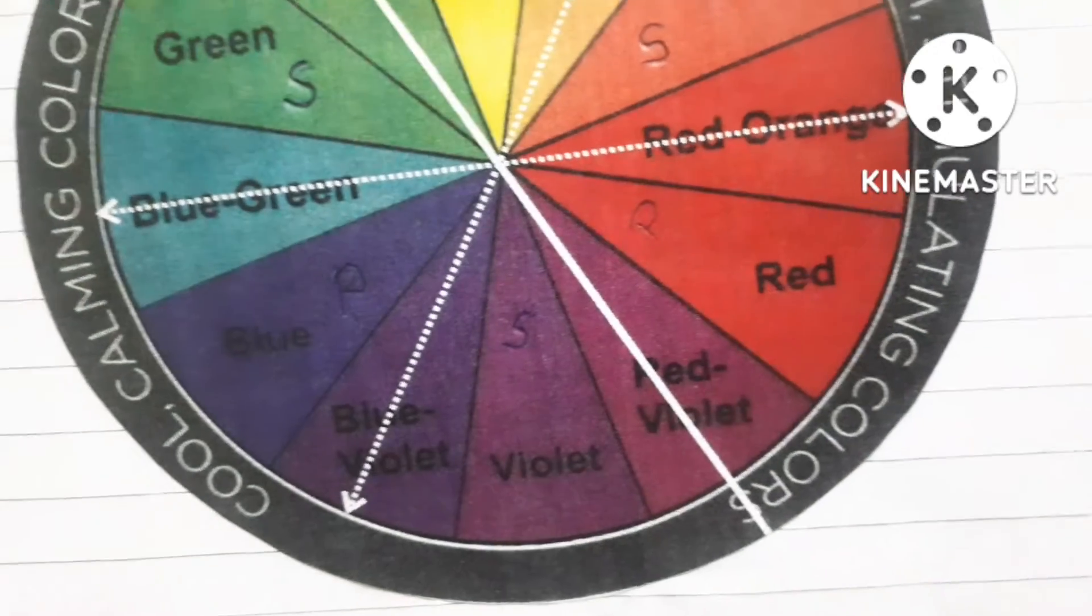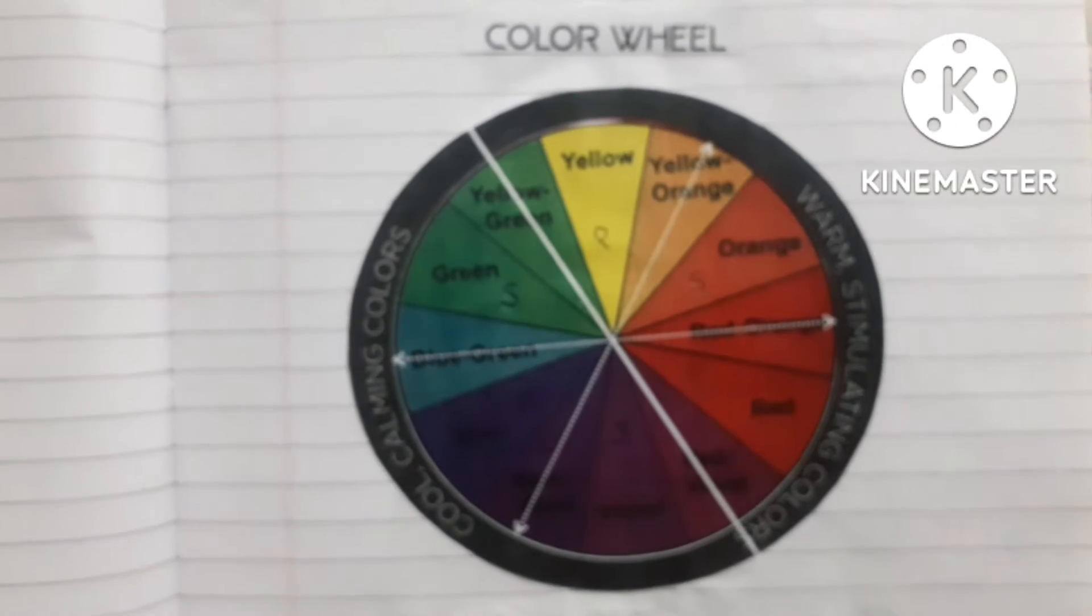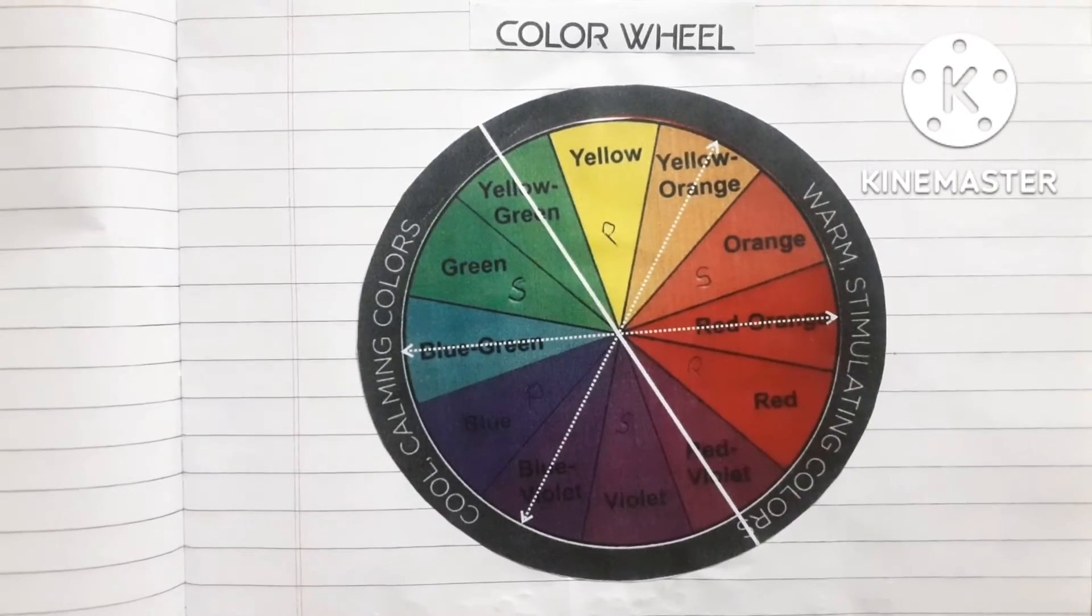The in-between colors is called tertiary colors. For example, we take yellow and orange, which is mid-color, that is yellow-orange.